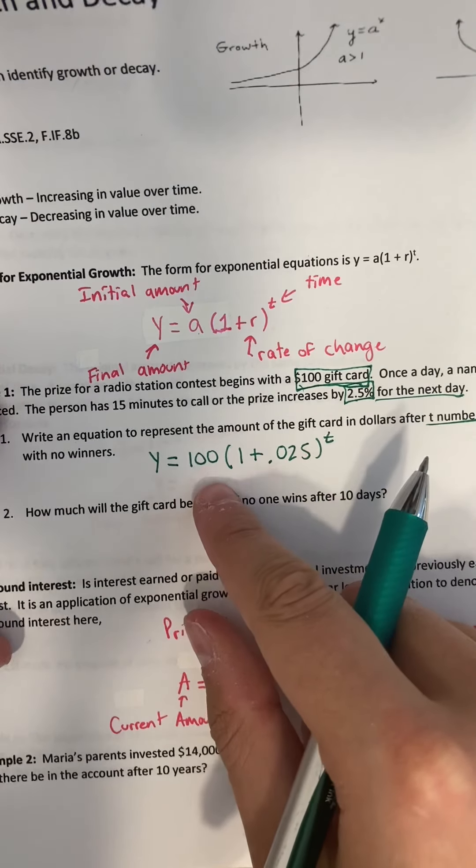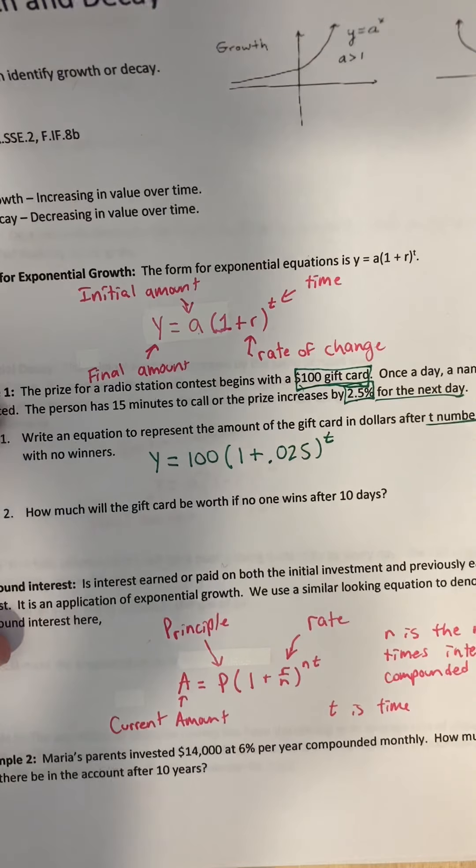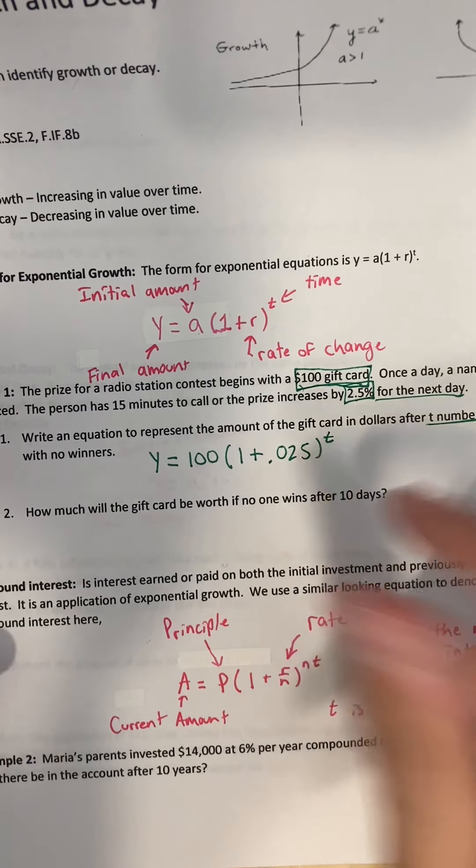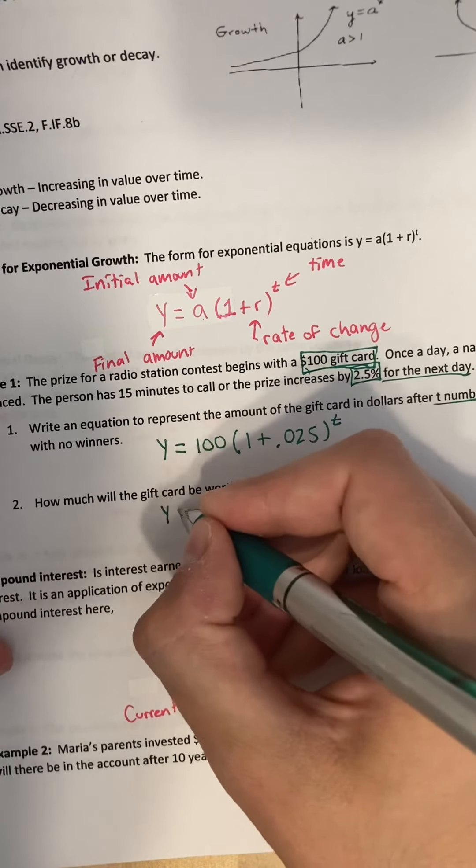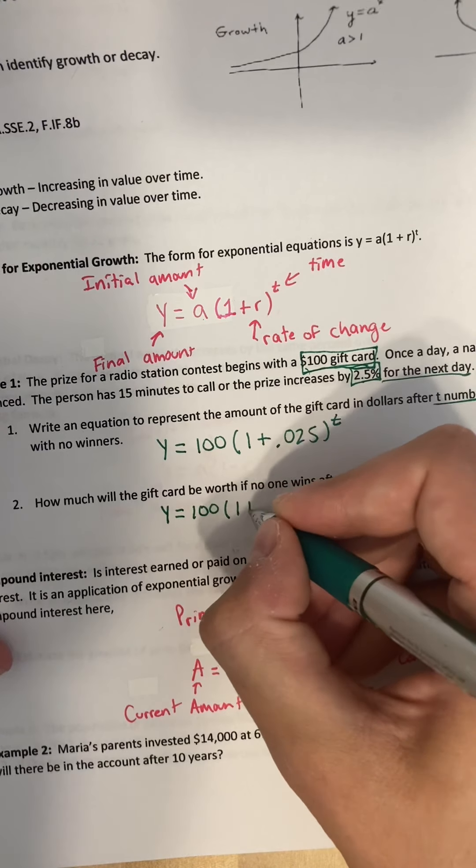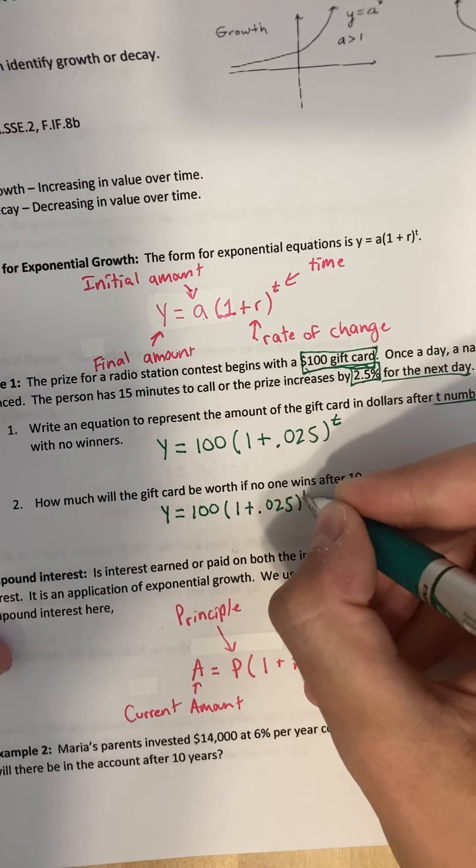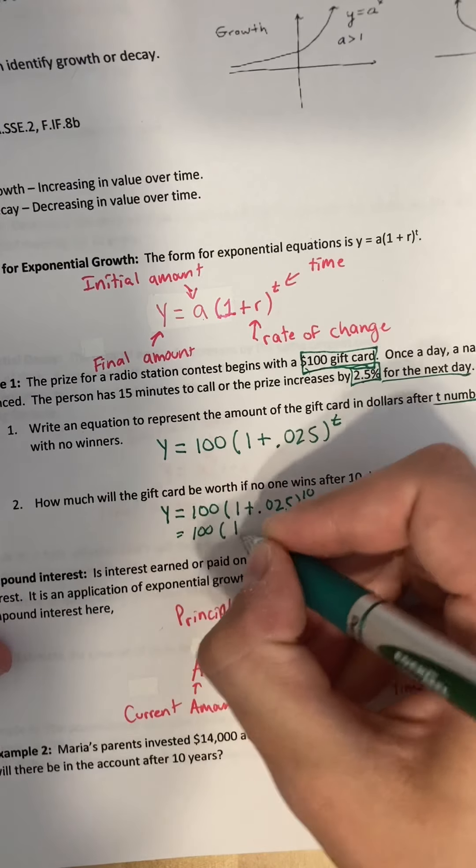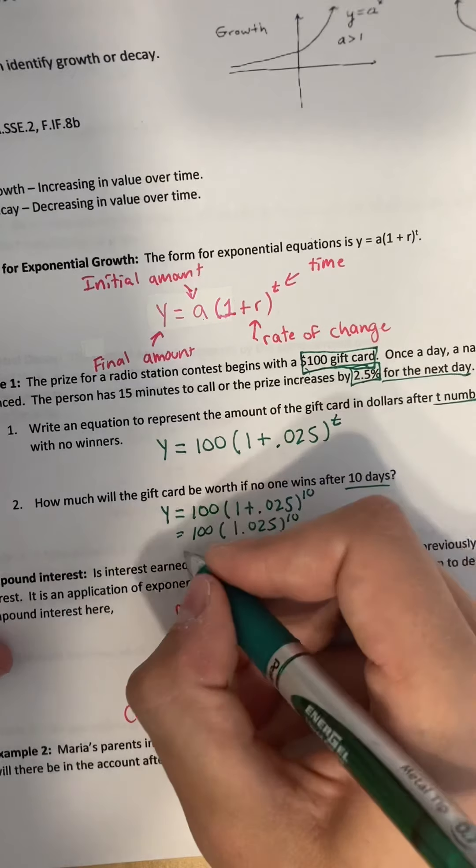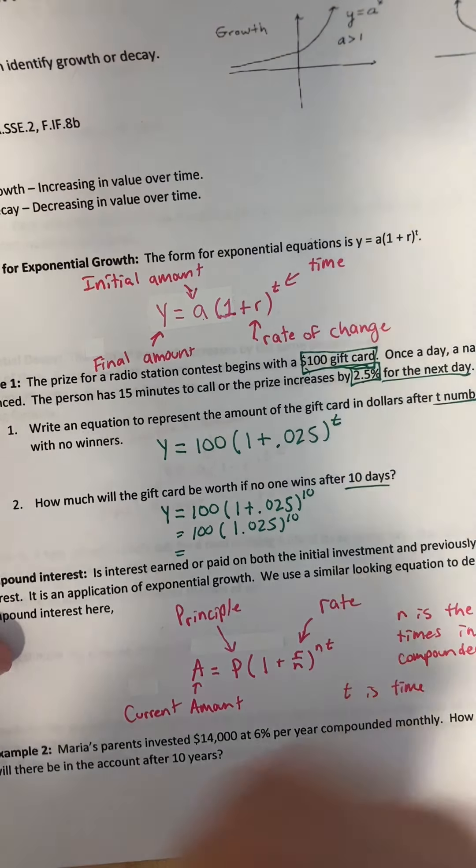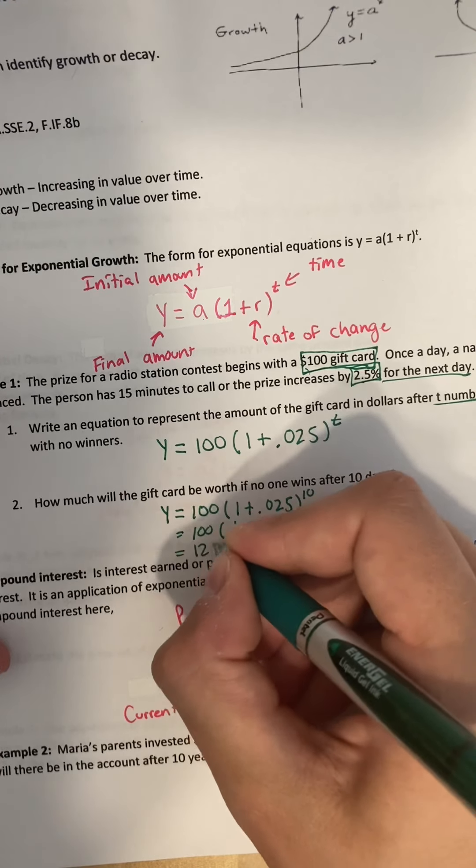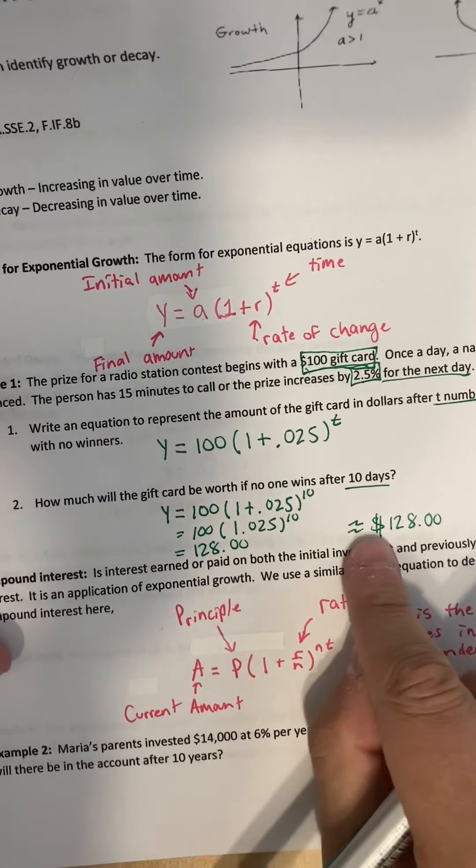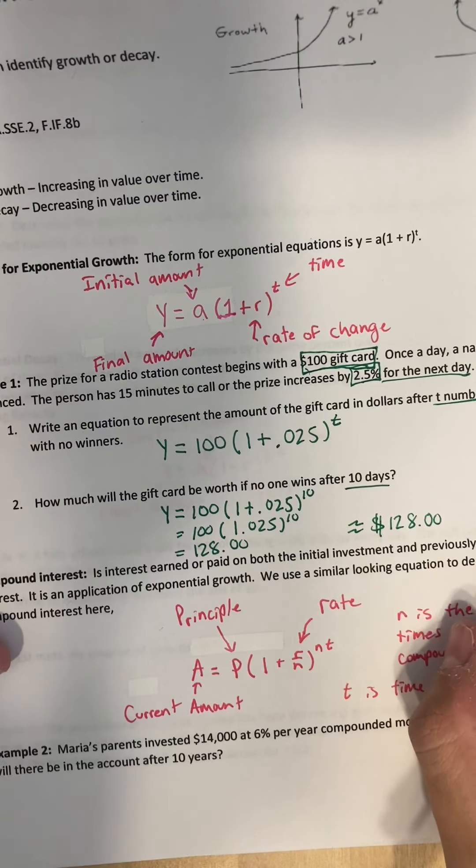So that's my equation. I can figure out at any number of days what the value of this contest is going to be. How much will the gift card be worth if no one wins after 10 days? So this is going to be our time. I'm going to plug in y equals 100 times 1 plus 0.025, I'm going to plug in 10. Then all you got to do is plug this into a calculator. So this will be 100 times 1.025 to the 10th power and I think I got around $128. So after 10 days this is around how much that contest is going to be worth.